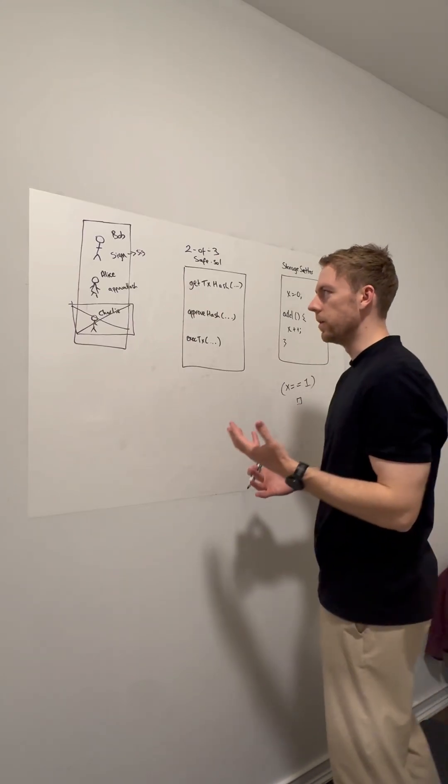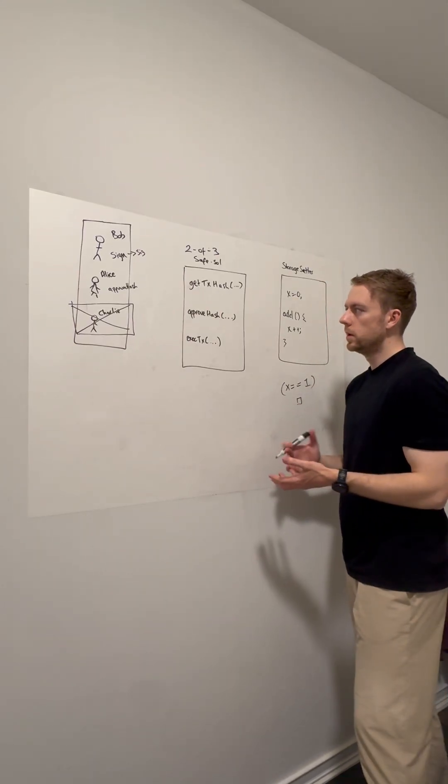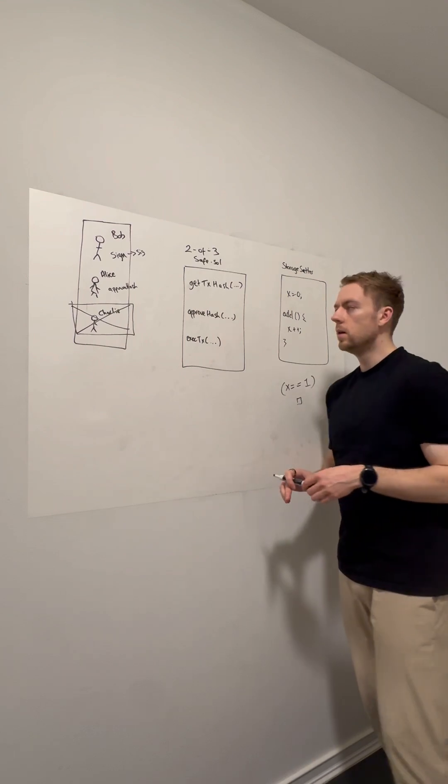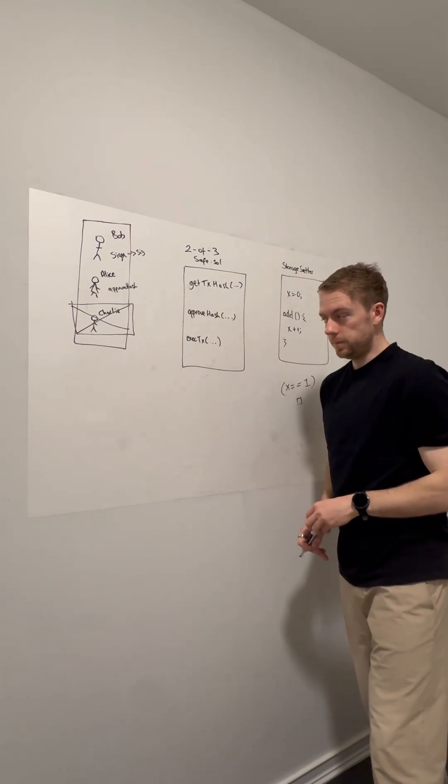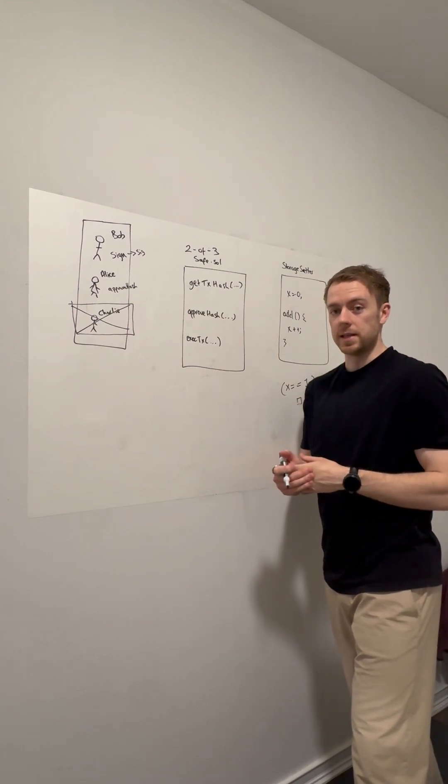When that's called by either Alice or Bob, what's happening? Basically, what's being returned is the actual hash that needs to be signed.